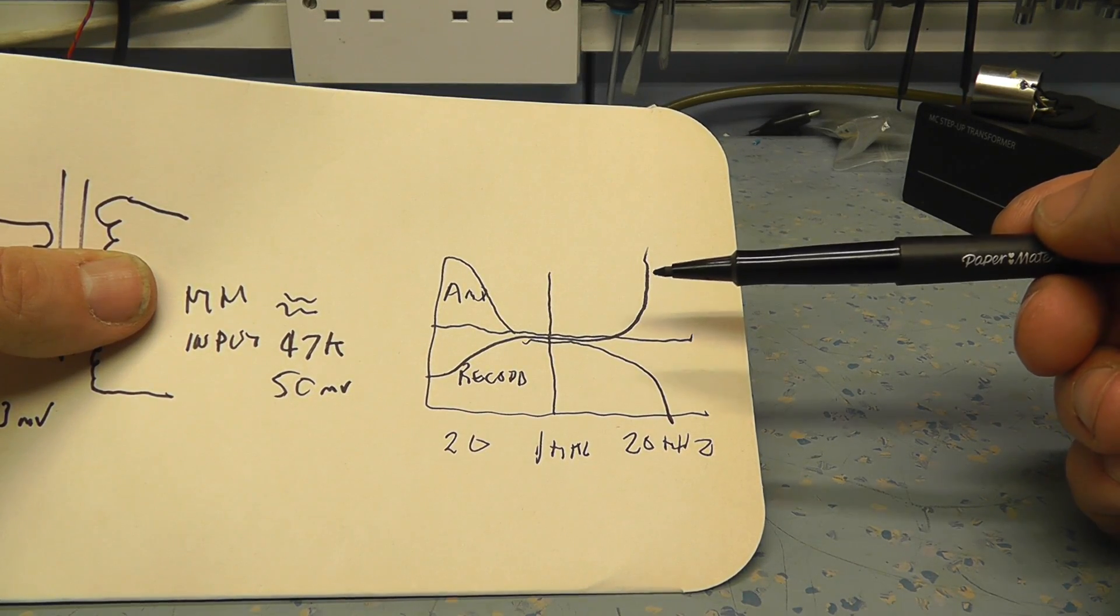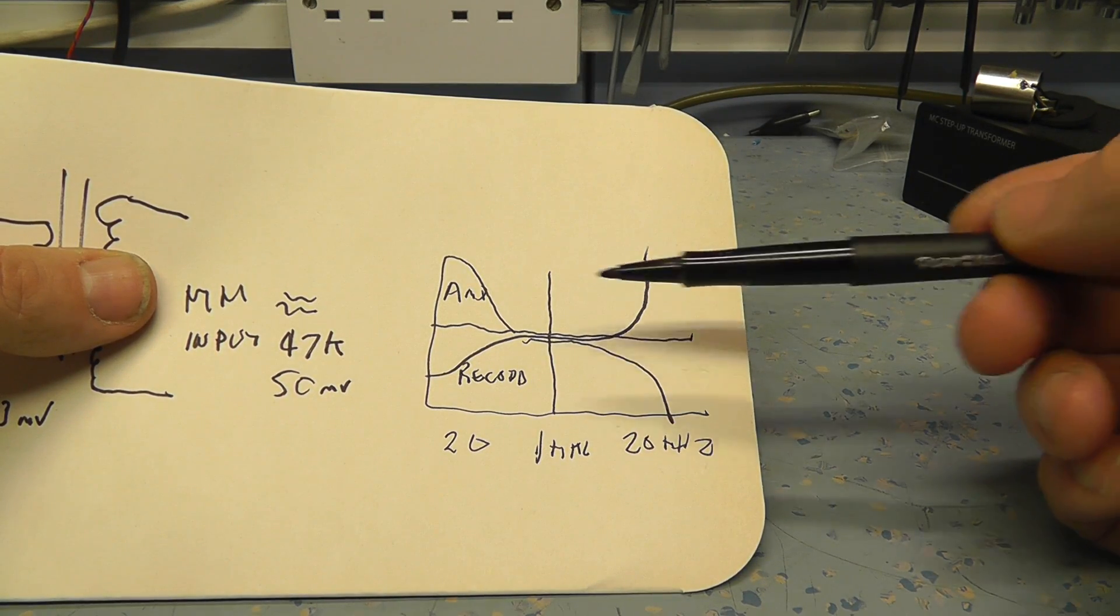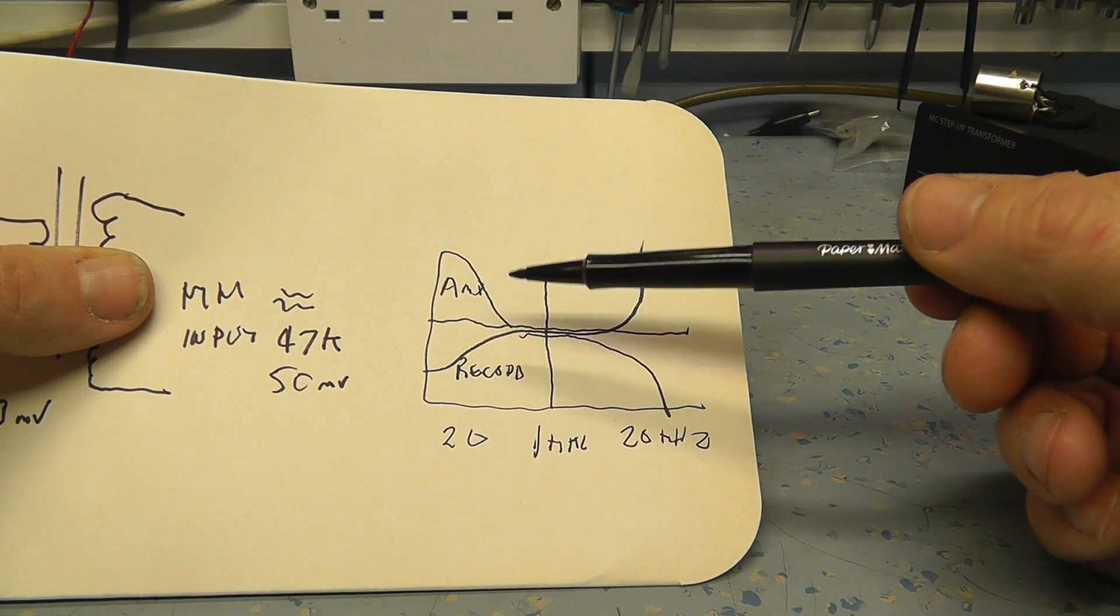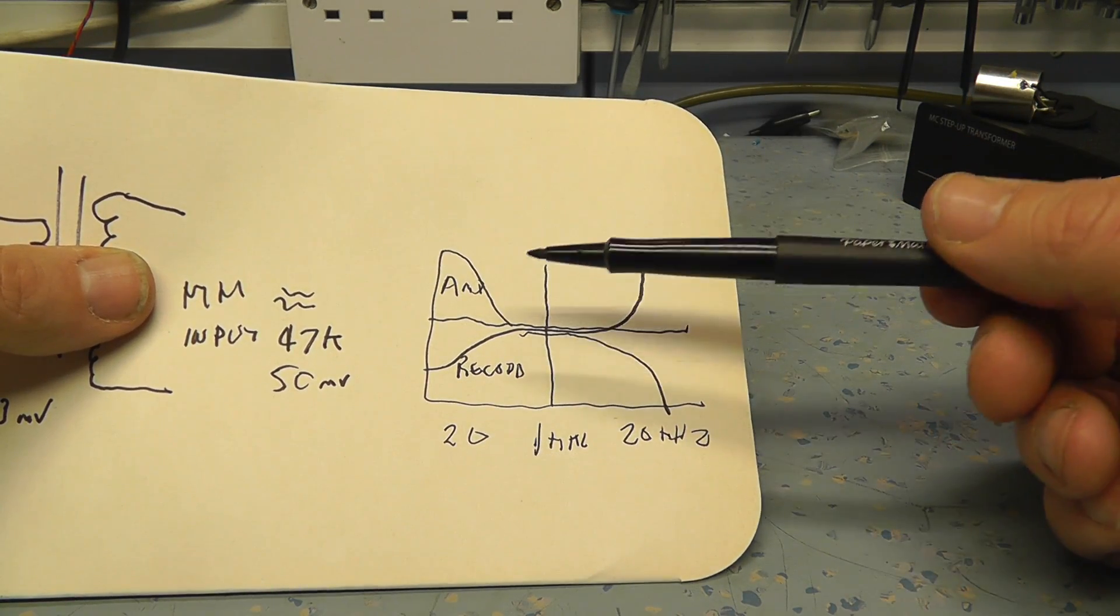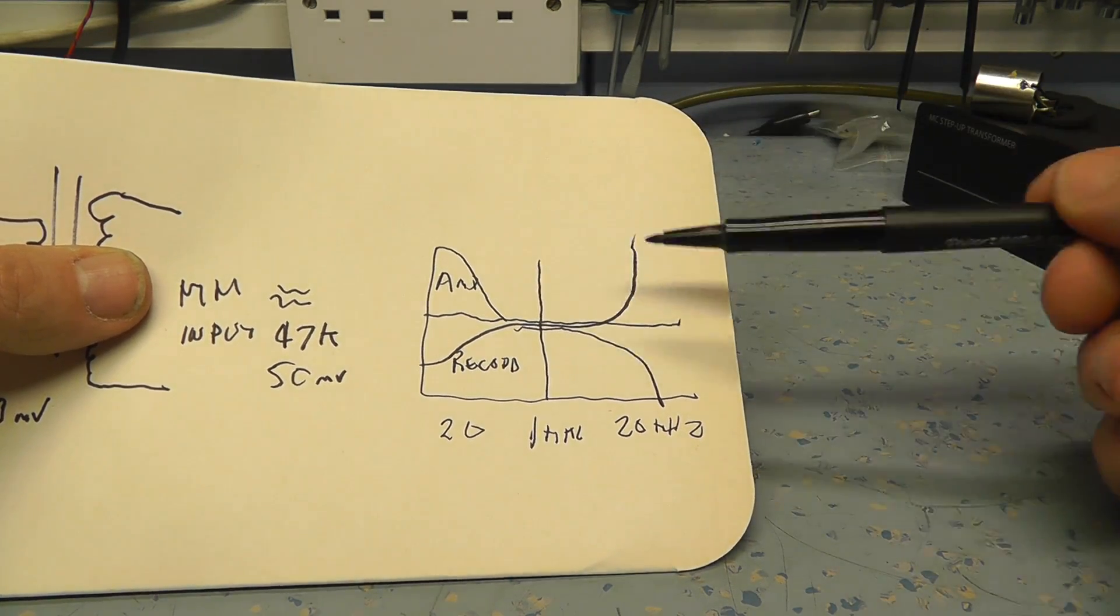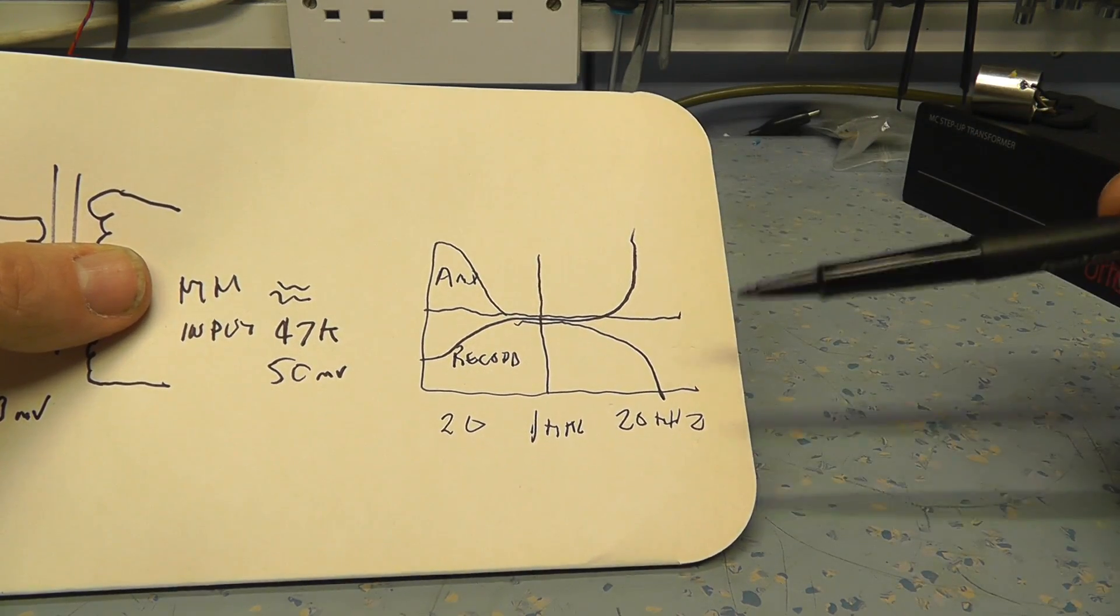So basically what you're doing is you're masking noise from the record. That reduces tracking noise, surface noise and all that sort of thing, clicks and pops, static and things like that, because you're boosting the bass and you're cutting the treble. The only thing you do do is you still get the low frequency rumble of any turntable that's got noisy bearings or anything like that.